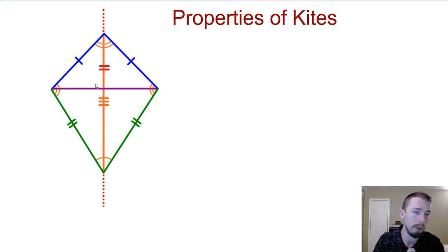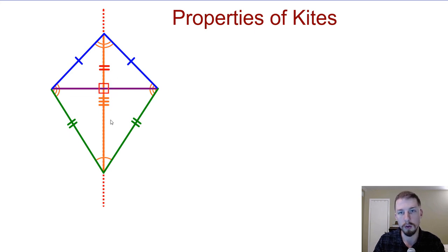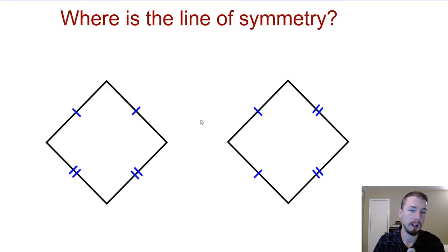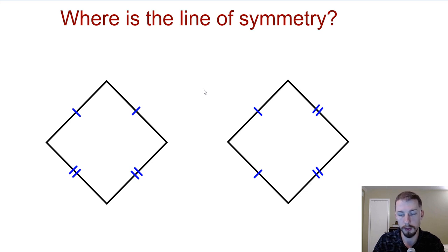One more thing to point out: if these triangles are the same, that means the angles in the middle all have to be the same, and so they are perpendicular as well. So the diagonals are perpendicular to each other. That's a kite. The one thing you really need to be able to do to solve problems with the kite is to find the line of symmetry.